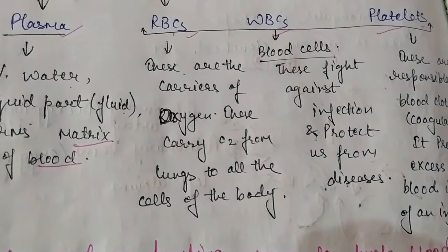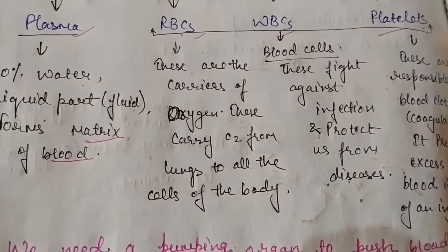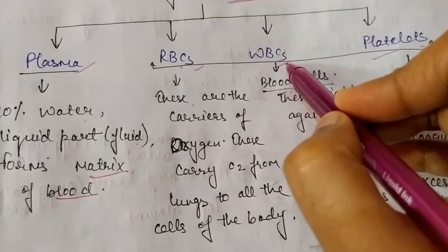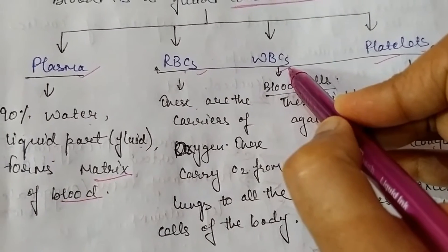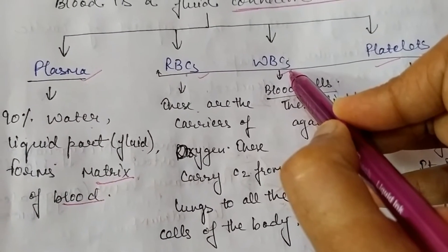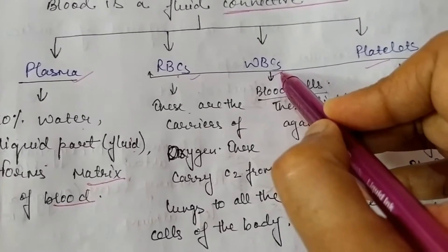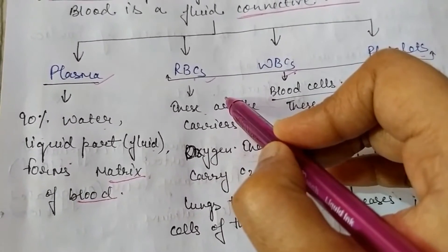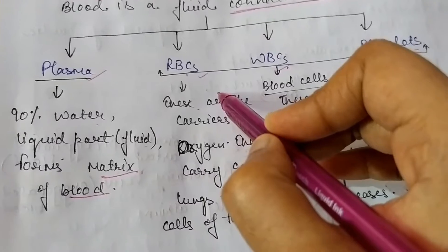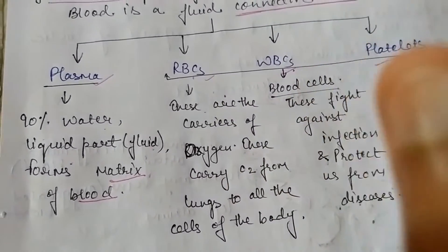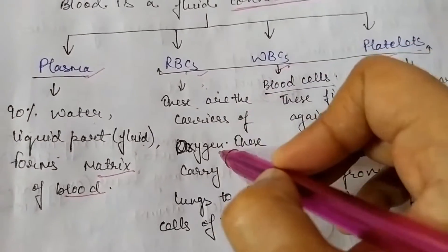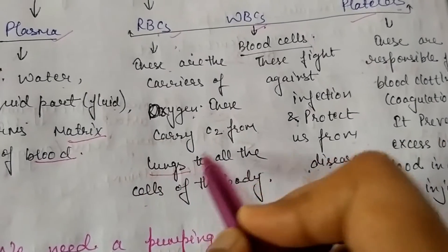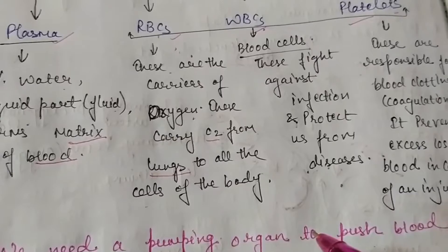RBCs are the red blood cells. They are red due to the presence of hemoglobin. WBCs are white blood cells; they are white because of the absence of hemoglobin. RBCs carry oxygen — hemoglobin has a very high affinity for binding oxygen, so RBCs are the carriers of oxygen. They carry oxygen from the lungs to all the cells of the body.